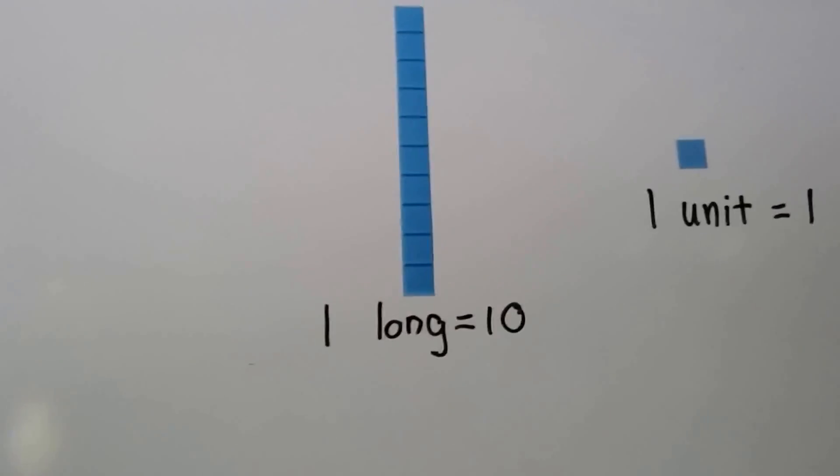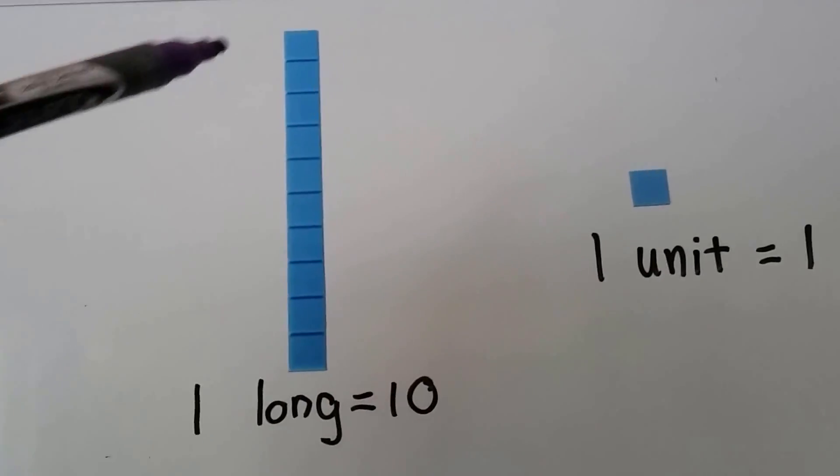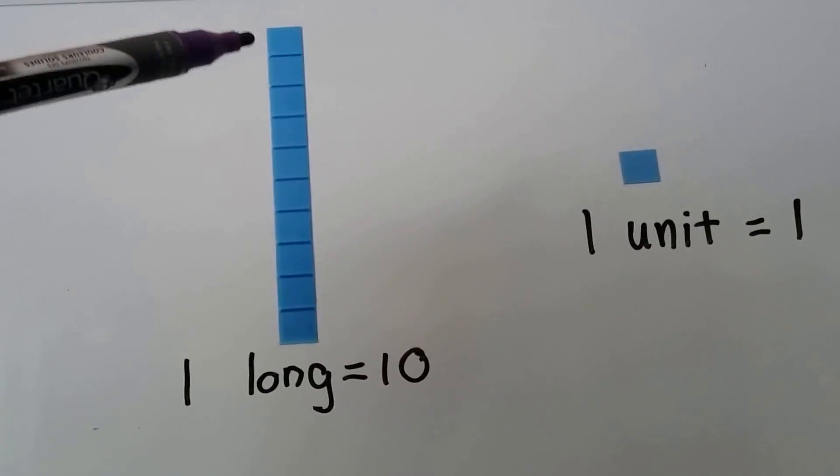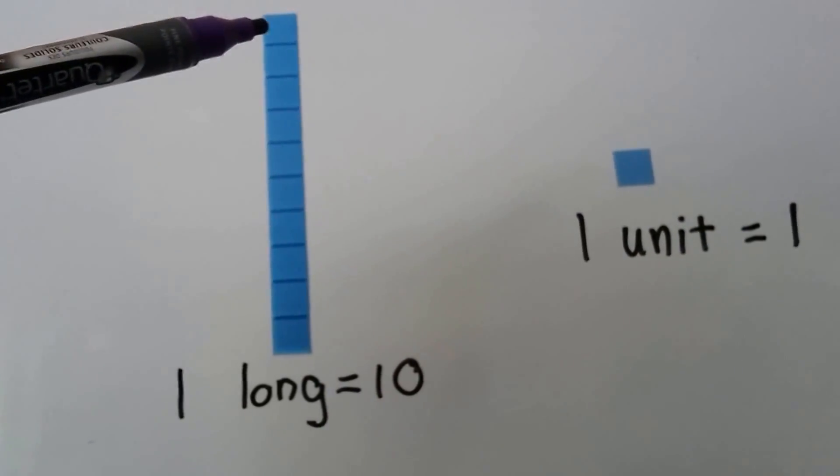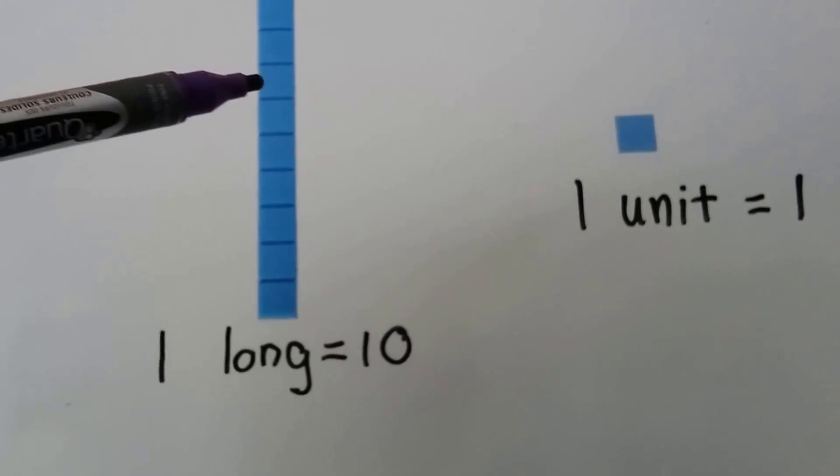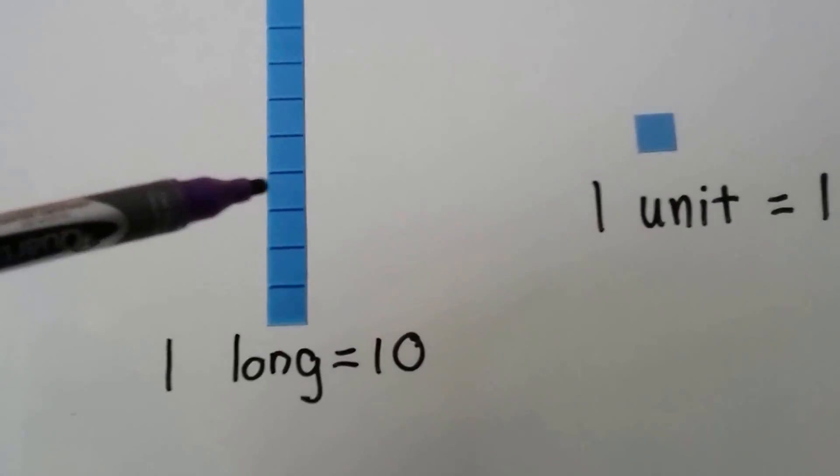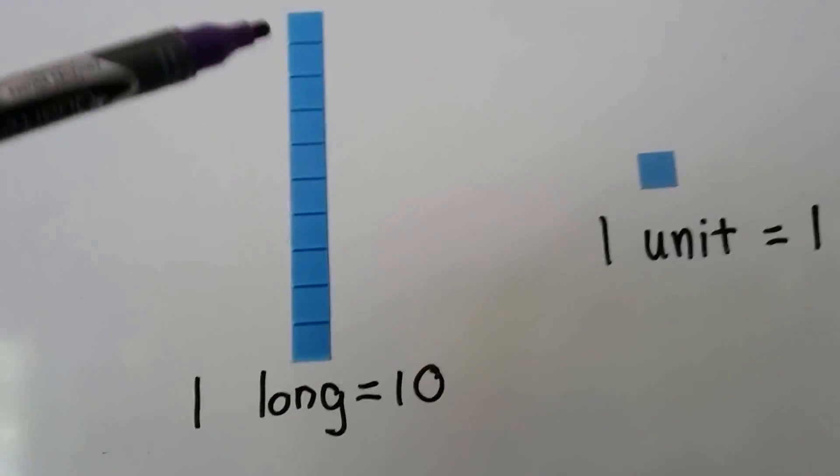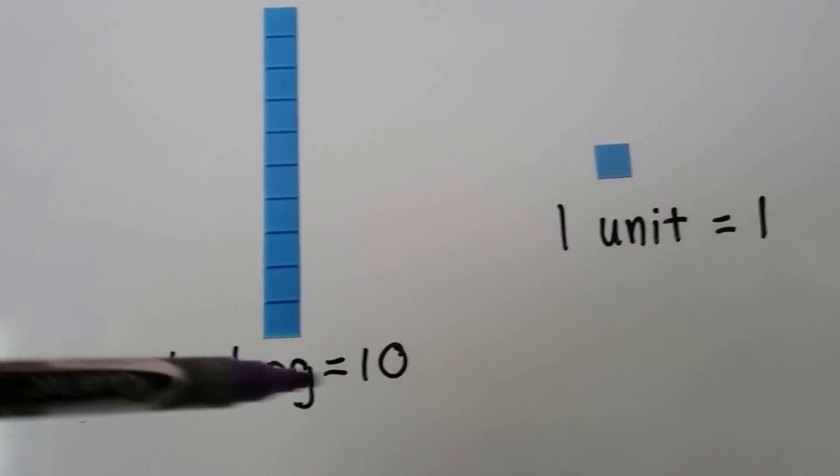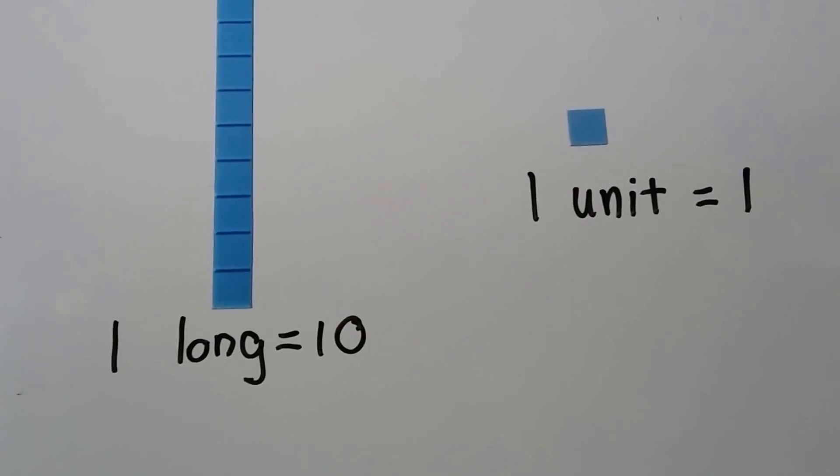Now we're going to be using longs and units in this chapter, and this is a long. It's just a bar that has ten to it. See? One, two, three, four, five, six, seven, eight, nine, ten. So when you see this, you know it's a ten. When you see that, you know it's a one.